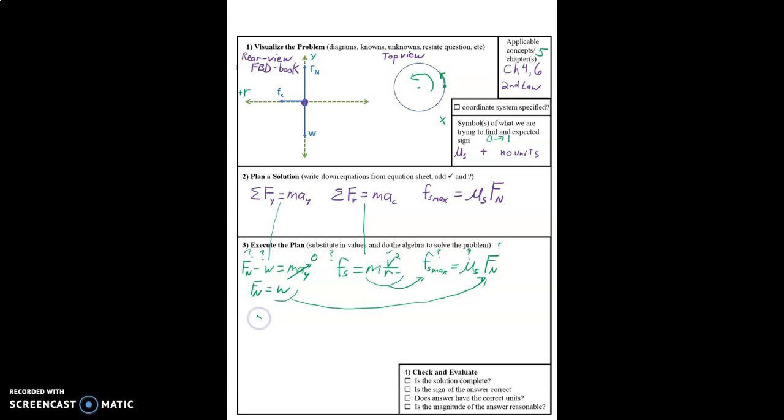We get m v squared over r equals mu s times w. But we know that w equals mg. So now we can substitute this in and say m v squared over r equals mu s times mg. Now we see we can divide both sides by m and we can divide both sides by g. So that cancels, that cancels.